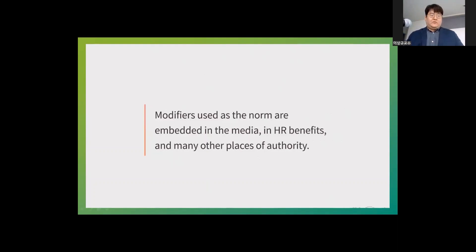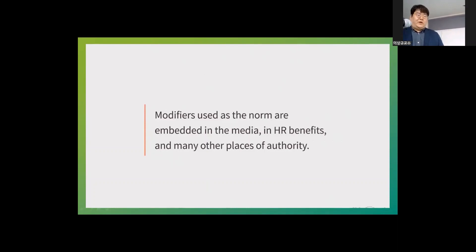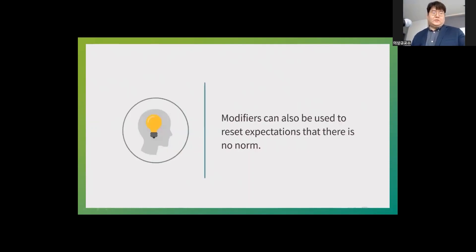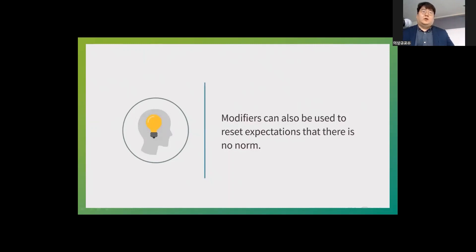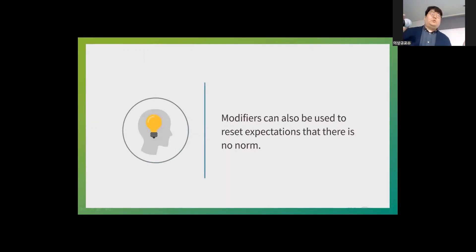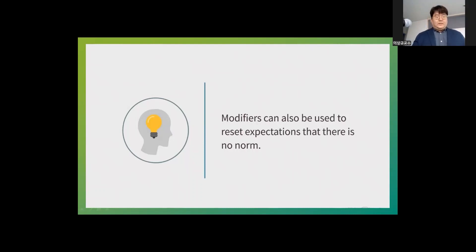We might not even realize we are using a modifier that embeds a norm — it's in media, HR benefits, and many other places of authority. An alternative is using phrases like 'opposite-sex couple' and 'same-sex couple,' so both terms have a modifier and there is no default norm. To include everyone, you can use the term 'couple' or 'partners' instead of husband or wife, or be more expansive and use opposite-sex, same-sex, and TGC designations.